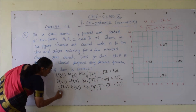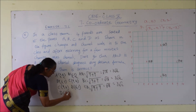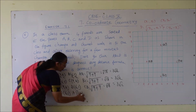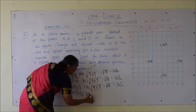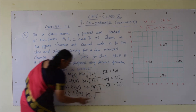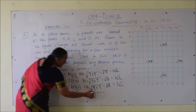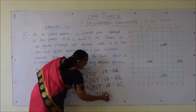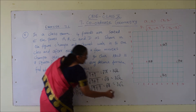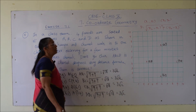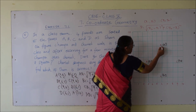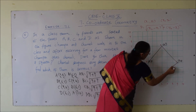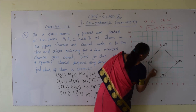Now finally, the distance between D and A. D is (6, 1) and A point is (3, 4). Distance DA = root over (3 − 6)² + (4 − 1)² = root over (−3)² + 3² = root over 9 + 9 = √18, which is 3√2. So distances AB, BC, CD and AD are all equal.